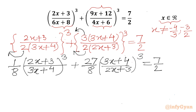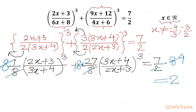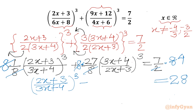Now we will multiply both sides by 8, term by term. We cancel 8 with 8 on each fraction term, and 8 with 2 on the RHS gives 4. So the LHS becomes (2x+3)/(3x+4) whole cube plus 27 times (3x+4)/(2x+3) whole cube, equal to 28.